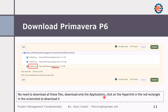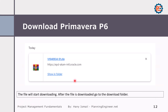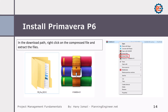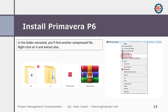No need to download all the files — I want only the application. Click on the hyperlink in the red rectangle on the screen to download it. The file will start downloading. After the file downloads, go to your downloads folder. You need to extract the file as it is compressed. Right click and extract it. You will find another compressed folder inside — right click on it and extract that as well.